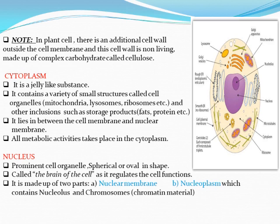Now we come to the cytoplasm. The cream or beige-colored part inside the cell membrane is known as the cytoplasm. It is jelly-like — not very liquid like water. It contains a variety of small structures called cell organelles.